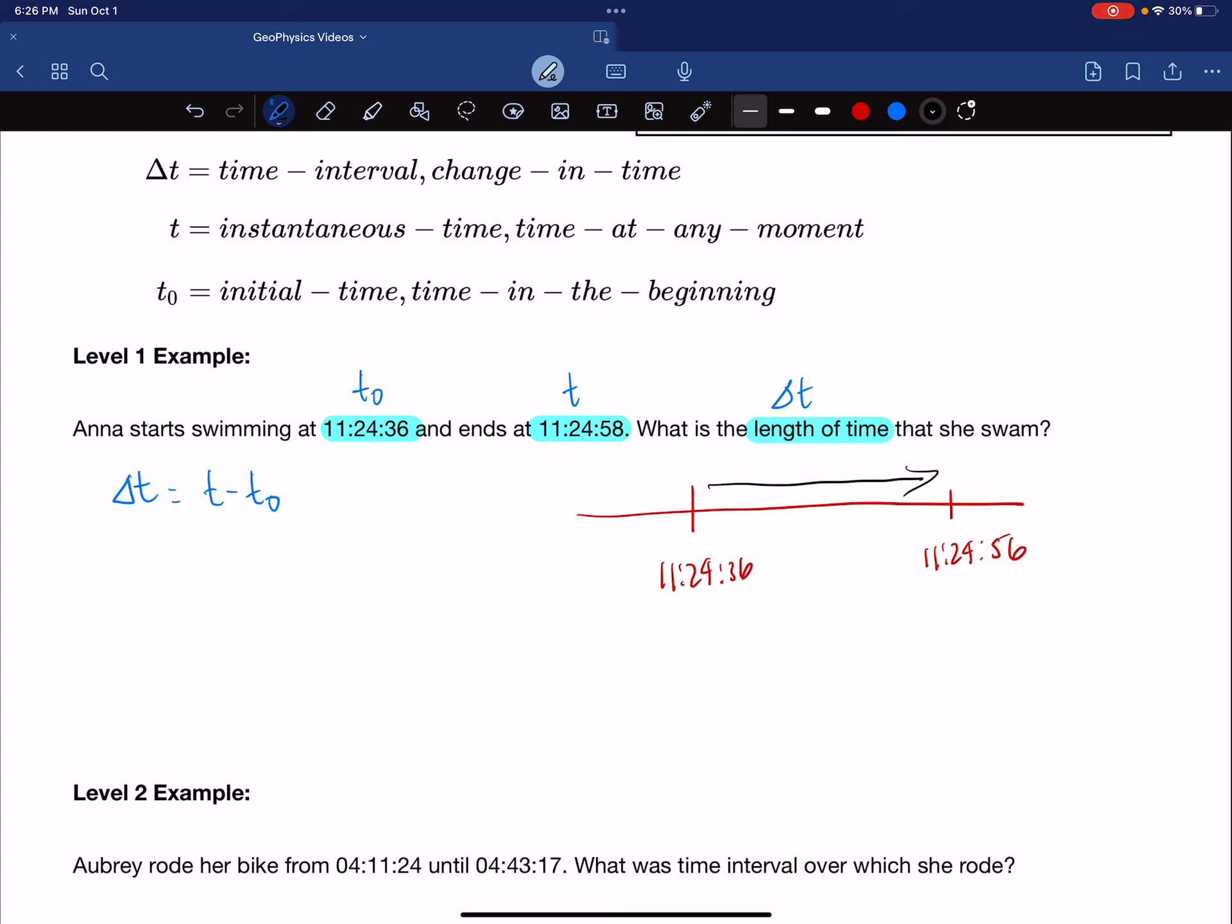And unlike position, time only has one direction. It can only go from smaller times to larger times. So we have our equation, and we know this one is t₀, and this one is the instantaneous time. And we're looking for that delta t.